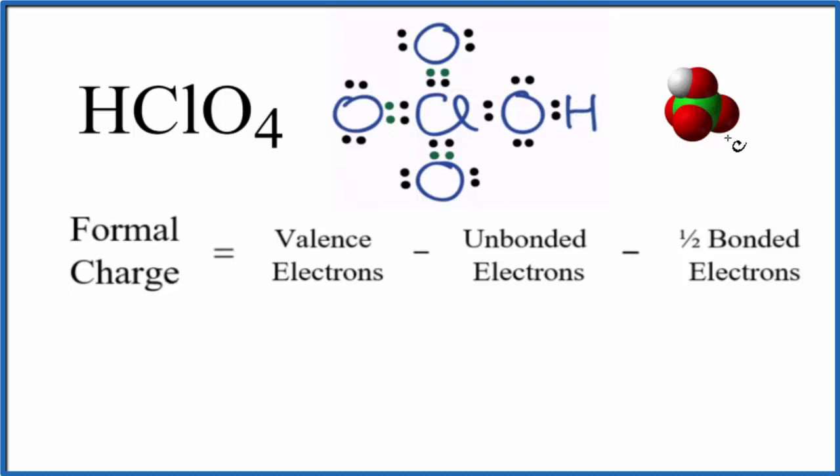Let's start with the chlorine here in the center. Cl on the periodic table, chlorine group 17, sometimes called 7a, 7 valence electrons. Unbonded - all of the electrons around the chlorine are involved in chemical bonds with oxygen atoms, so we don't have any unbonded.